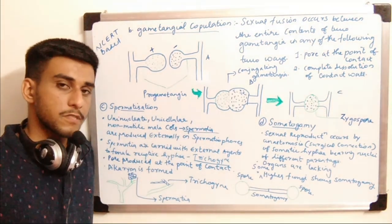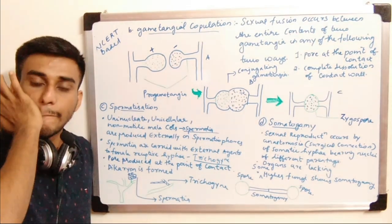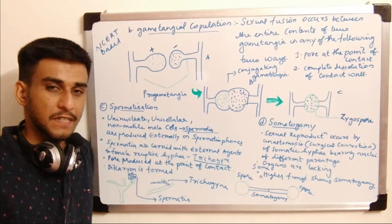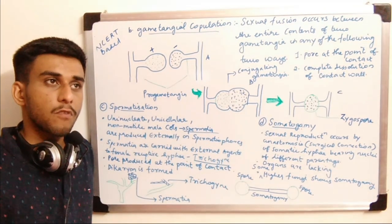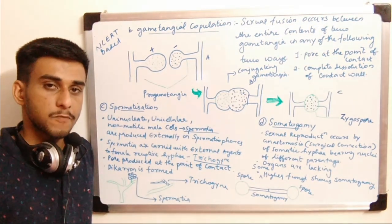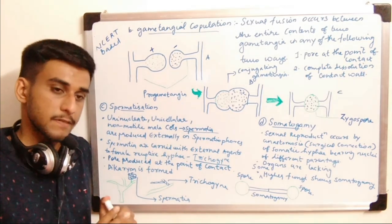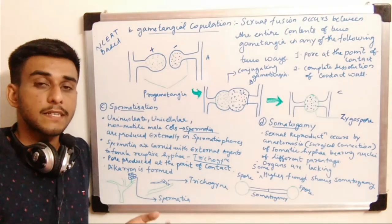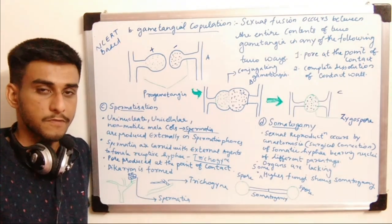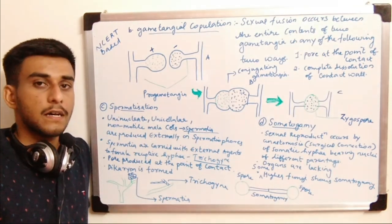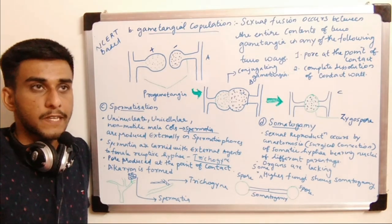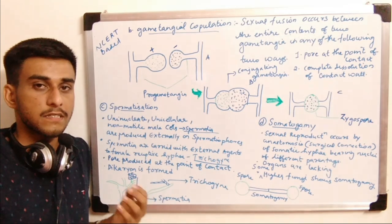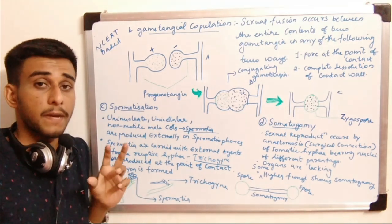The third method is spermatization. Spermatization means the formation of sperm cells — male gametes. These sperm cells are known as spermatia. The spermatia are produced externally in certain structures known as spermatophores.